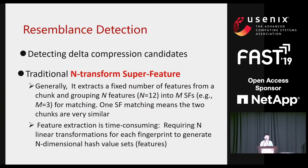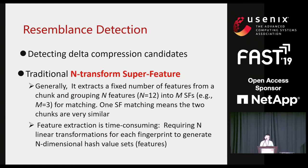In a deduplication-based storage system, resemblance detection is the key step for data compression, which identifies suitable data compression candidates. Currently, the most commonly used chunk-level resemblance detection is a super feature-based approach, which we call the n-transform super feature-based approach. It extracts a fixed number of features from a chunk and groups those features into several super features. Two chunks sharing a single super feature are likely to be considered very similar, since they must have many identical features with a very high probability. However, the traditional super feature approach requires many linear transformations, which is very time-consuming.